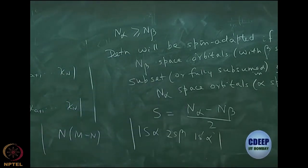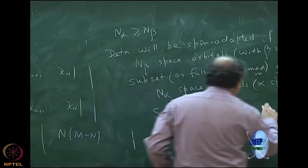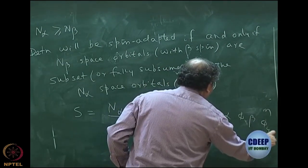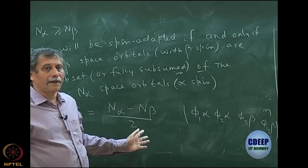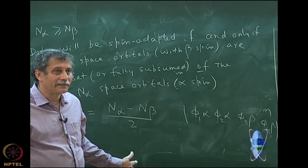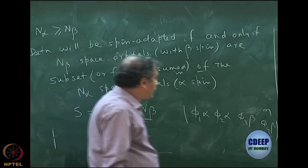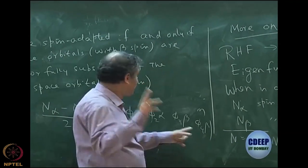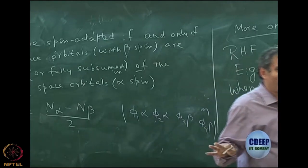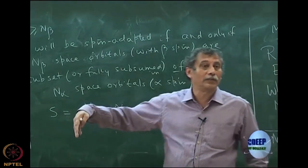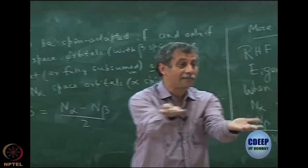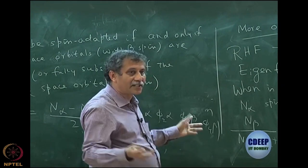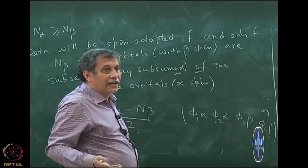If I have a determinant phi_1 alpha, phi_2 alpha, phi_3 beta, phi_4 beta, where phi_1 through phi_4 are all different, then it is not spin-adapted. For spin adaptation in this case, phi_3 and phi_4 must be the same as phi_1 and phi_2. For a beryllium-like system, the determinant is 1s alpha, 1s beta, 2s alpha, 2s beta - which is obviously spin-adapted.